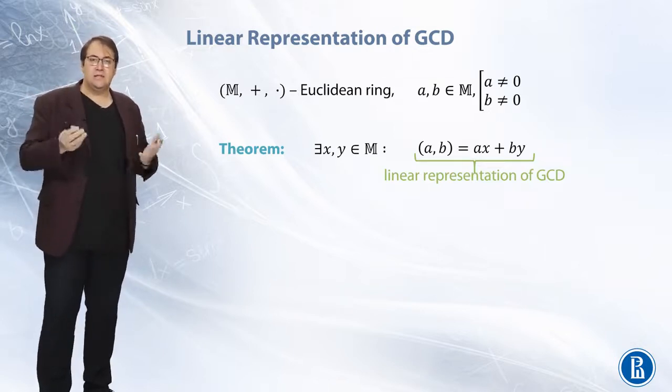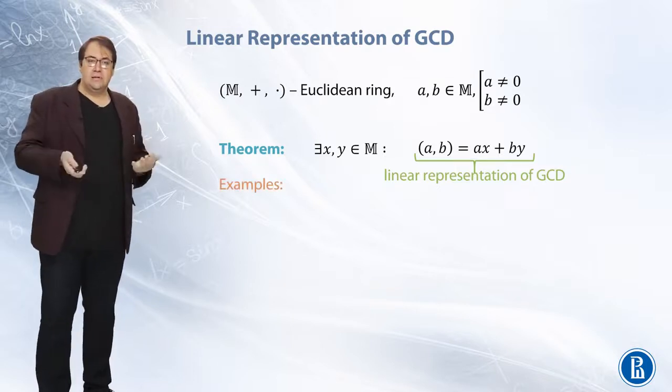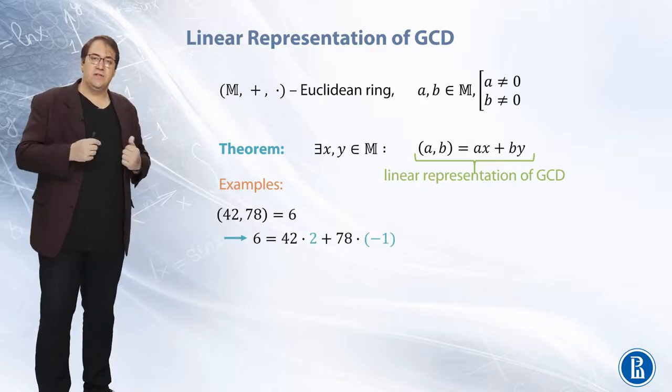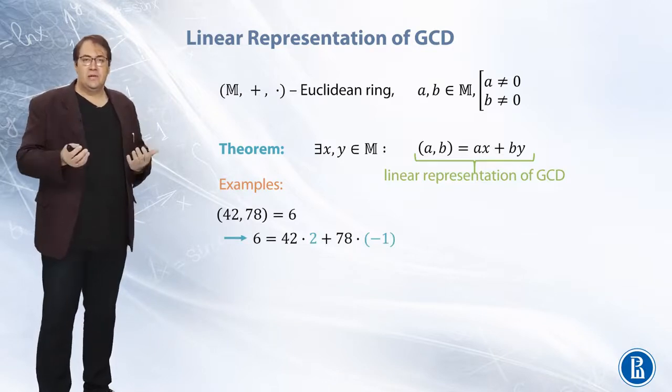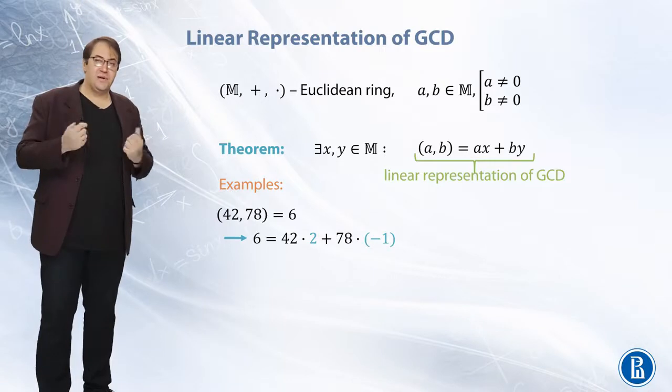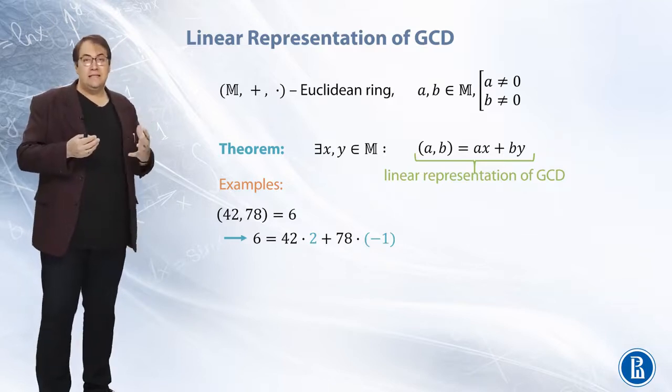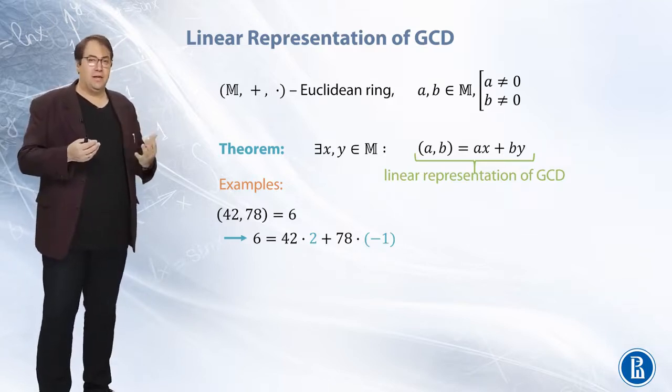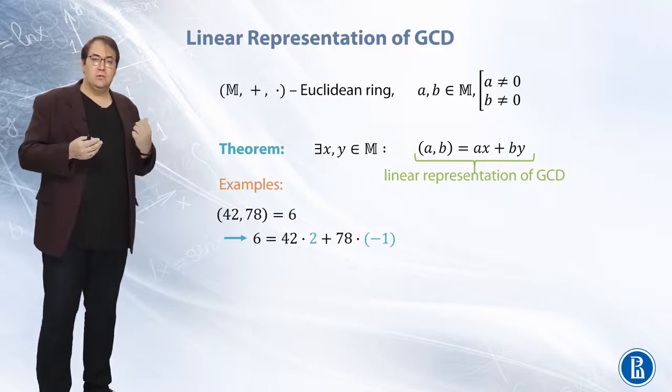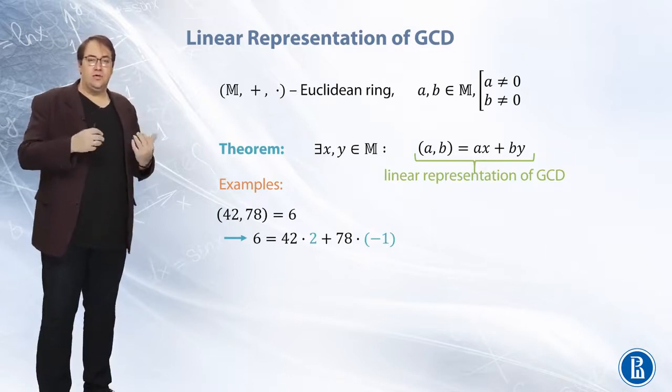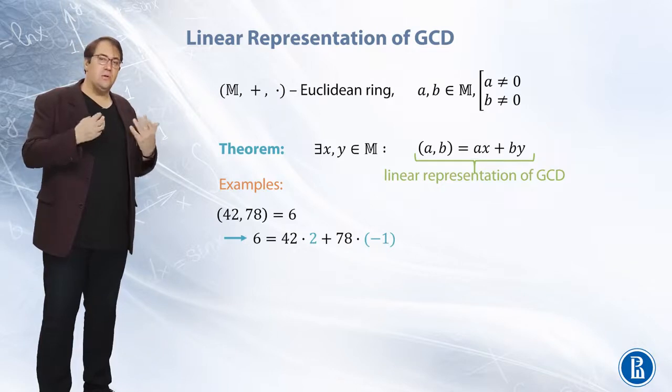For instance, let's consider several examples. Numbers 42 and 78, integers from the previous video. We know that 6 is one of their greatest common divisors and 6 can be represented as the first of them multiplied by 2 plus the second integer multiplied by minus 1. So 2 and minus 1 are x and y correspondingly and 42 and 78 play the roles of a and b.